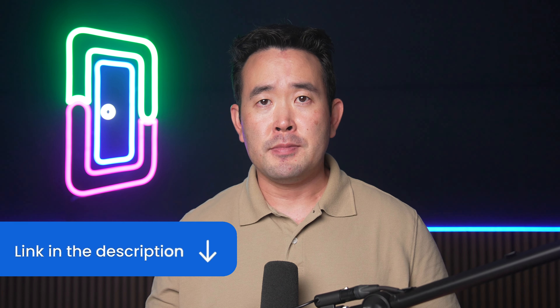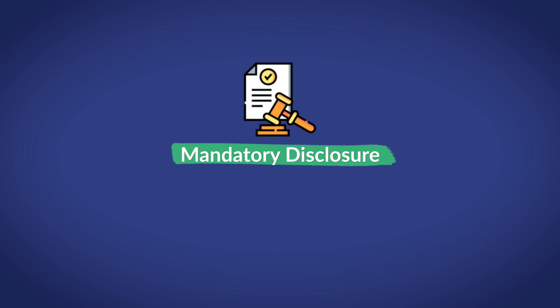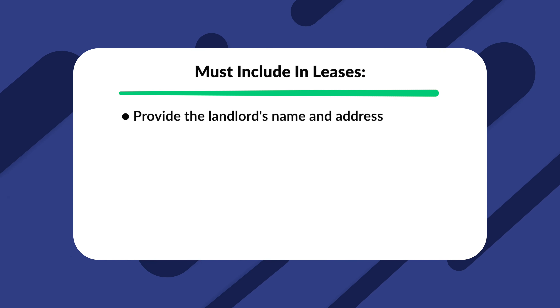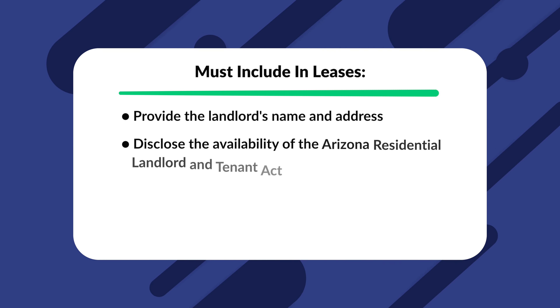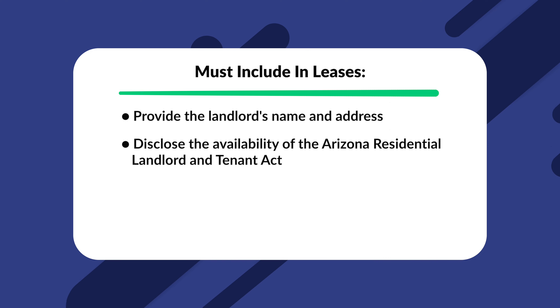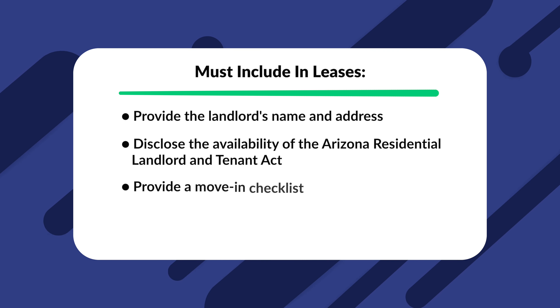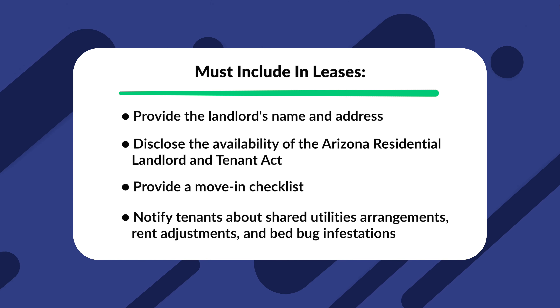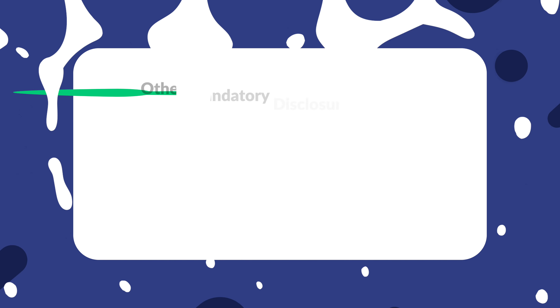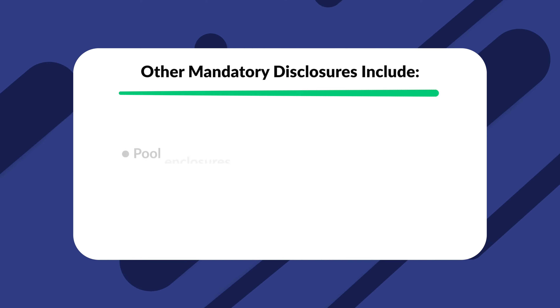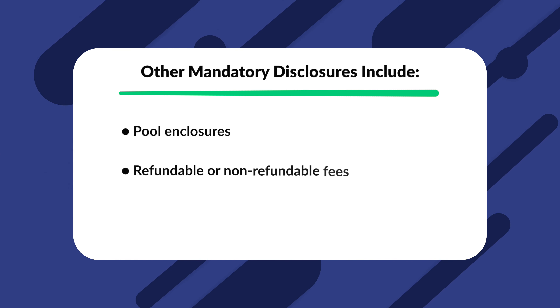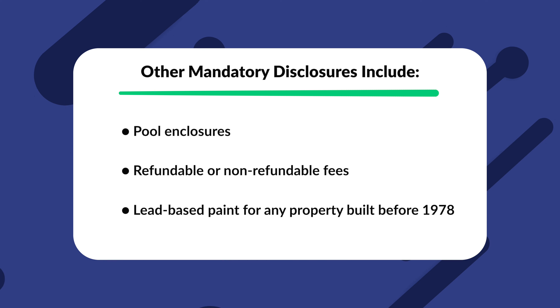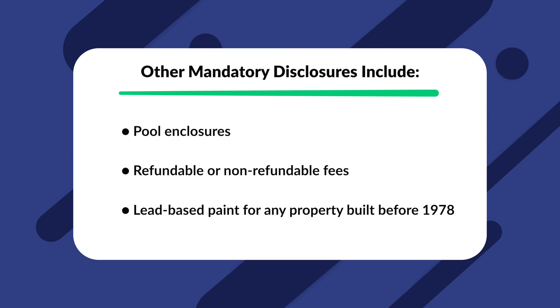Click on the link in the description below. Now let's discuss mandatory disclosures. There are certain items that property owners must include in leases. For example, you need to provide the landlord's name and address, disclose the availability of the Arizona Residential Landlord and Tenant Act, provide a move-in checklist, and notify tenants about shared utilities arrangements, rent adjustments, and bed bug infestations. Other mandatory disclosures include pool enclosures, refundable or non-refundable fees, and lead-based paint for any property built before 1978.